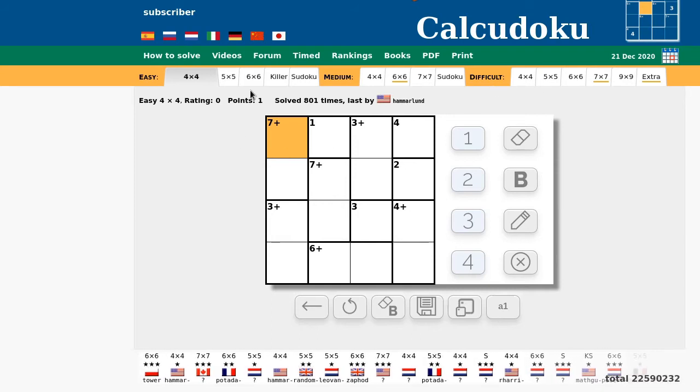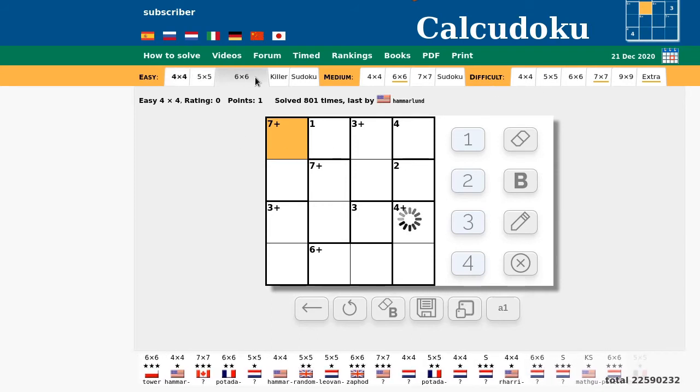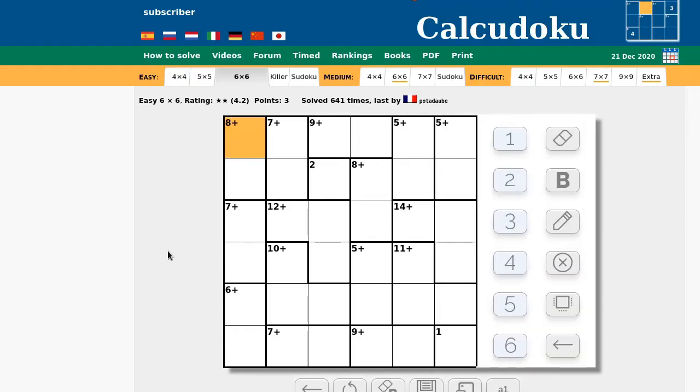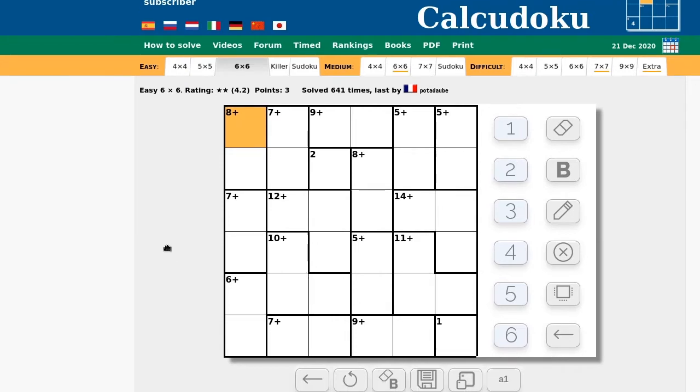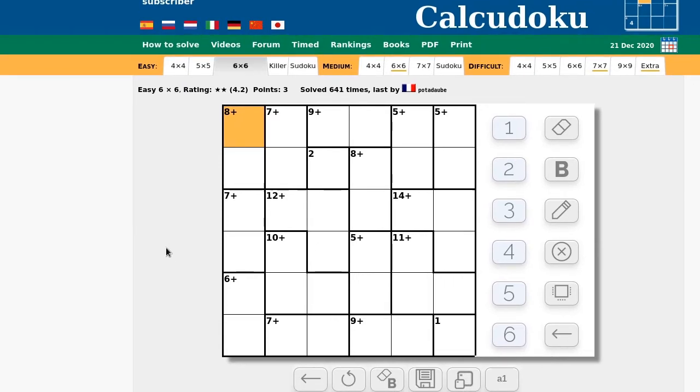I'll start off by trying to solve today, that's the 21st of December, today's six by six easy puzzle. Let's just start by filling in the numbers that are already given. The next step often is to focus on cages that have, in this case, small totals or large totals, because they tend to have fewer possibilities.